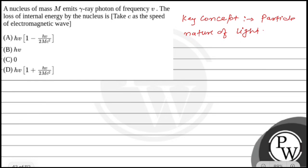So in the question we have been given that the nucleus of mass M emits a gamma-ray photon of frequency ν. So we know if any atom or nucleus emits light of frequency ν, its energy is h times ν. So we can simply write energy equals h times ν.